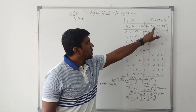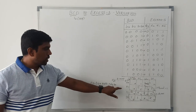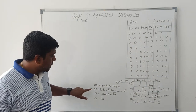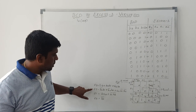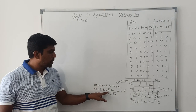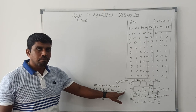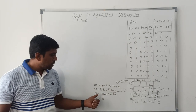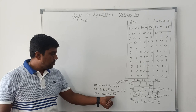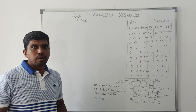Likewise we find E2, E1, and E0 using K-map. After simplification, E2 = B2'B1 + B2'B0 + B2·B1'·B0'. Then E1 = B1·B0 + B1'·B0'. Then E0 = B0'.